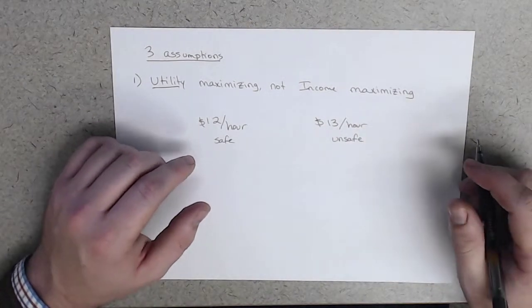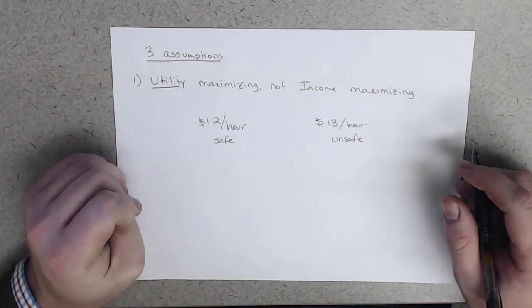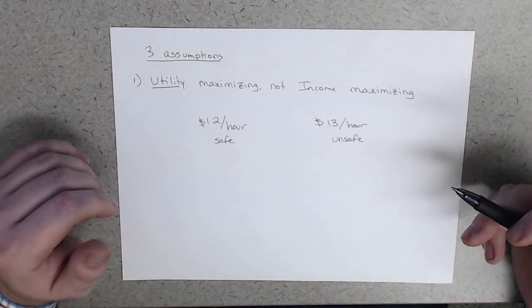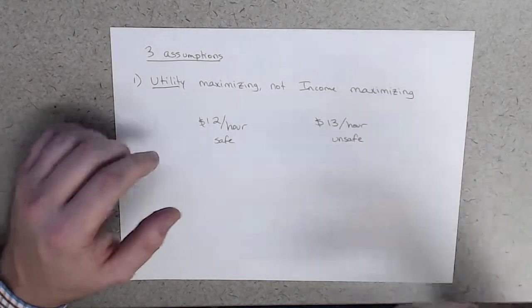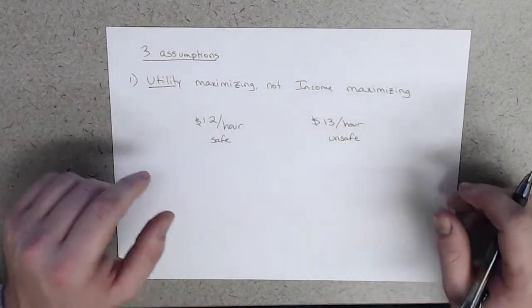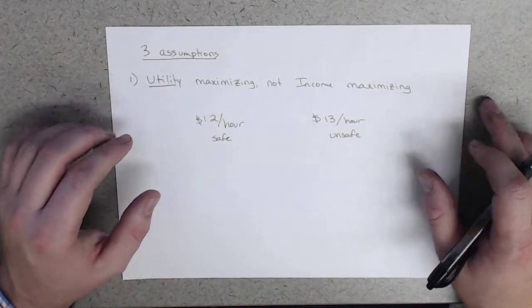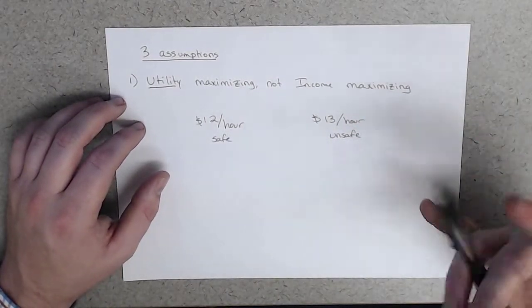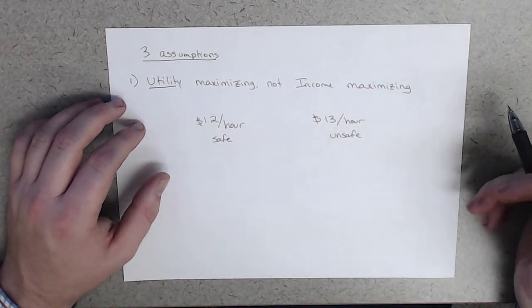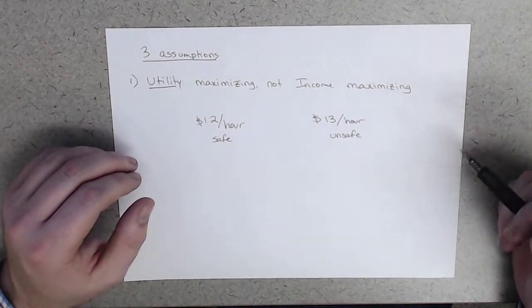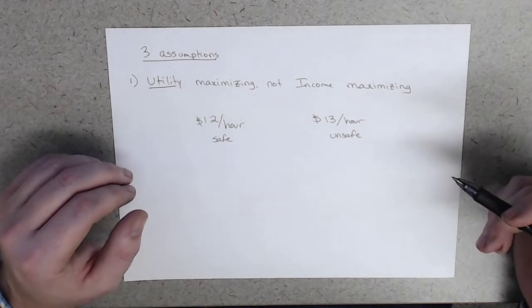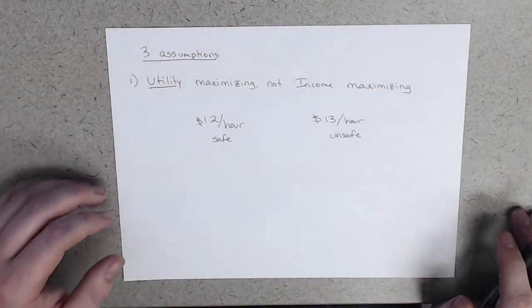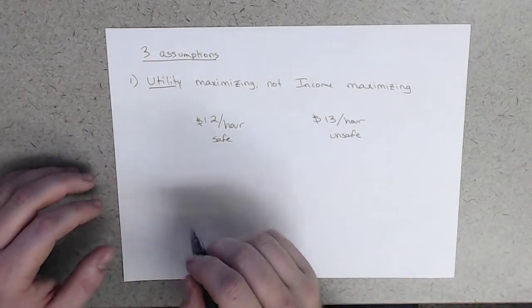A corollary of this is that while wages, the dollar wages, might not equilibrate across these different work environments, the overall utility from the pay and working environment combined will tend to equilibrate for the marginal employee, which is a fun corollary.